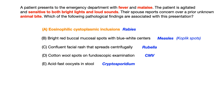Cotton wool spots on fundoscopic exam are associated with CMV — cytomegalovirus. Risk factors for CMV include immunosuppressed patients, patients who work in childcare, or patients who underwent transplant. All of these hint at increased susceptibility to infection, either from immunosuppression or childcare exposure.